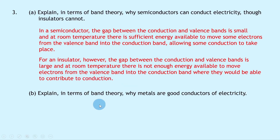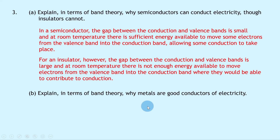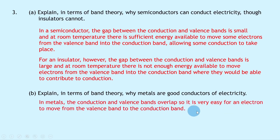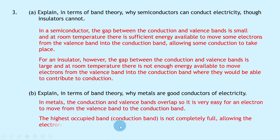Part b says: explain in terms of band theory why metals are good conductors of electricity. To explain this in terms of band theory we need to mention the three key words: valence band, conduction band and electrons. In metals, the conduction and valence bands overlap, so it is very easy for an electron to move from the valence band to the conduction band. The highest occupied band, which is the conduction band, is not completely full, allowing electrons to move and therefore conduct.